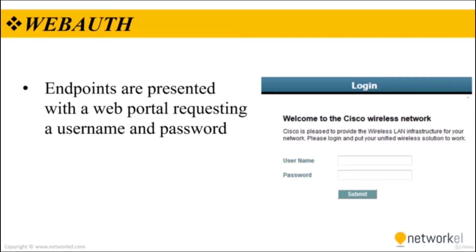The username and password submitted through the web portal are sent from the switch to the RADIUS server in a standard RADIUS access request packet, similar to MAB. The switch sends the request on behalf of the endpoint to the RADIUS server because the endpoint is not authenticating directly to the switch. Unlike MAB, WebAuth is only for users and not devices, since it requires a web browser and manual username and password entry.